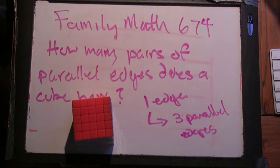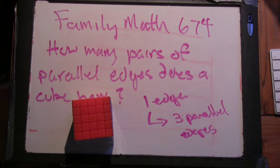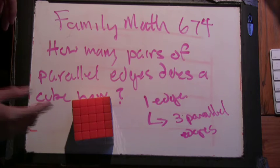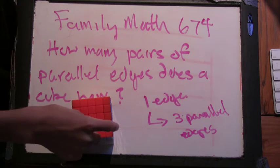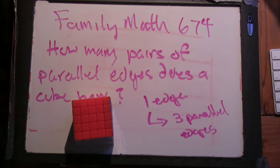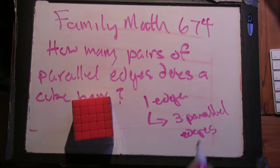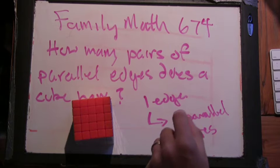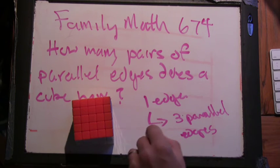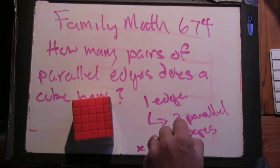So each edge has three parallel edges. That's actually a really good way to think about it. So then, we have to multiply by the total number of edges. That's 12. We can multiply. That's gonna be 36. So, 12 edges.